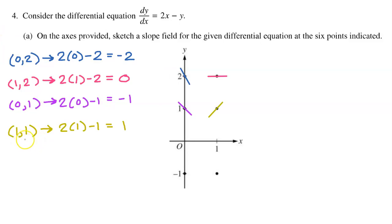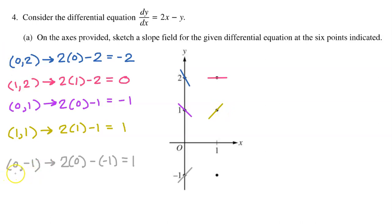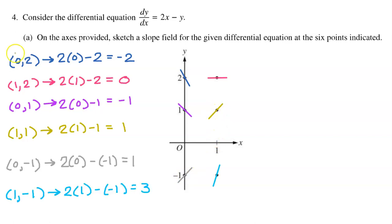At the next point, the slope is 1, so the slope should be increasing at a 45-degree angle. At another point, the slope is also 1, so it should be increasing at a 45-degree angle and look equally steep. At the final point, the slope is 3, so the slope should be increasing and greater than a 45-degree angle — steeper than the previous segment.